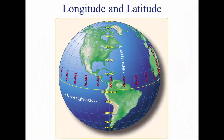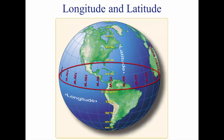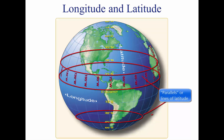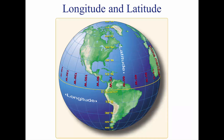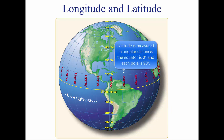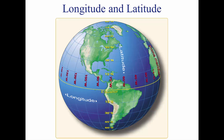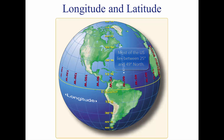Latitude and longitude. The equator is an imaginary circle equidistant from the poles of the Earth. Circles parallel to the equator — lines running east and west — are parallels of latitude. They are used to measure degrees of latitude north or south of the equator. The angular distance from the equator to the pole is one-fourth of a circle, or 90 degrees. The 48 conterminous states of the United States are located between 25 degrees and 49 degrees north latitude. The arrows in this figure labeled latitude point to lines of latitude.